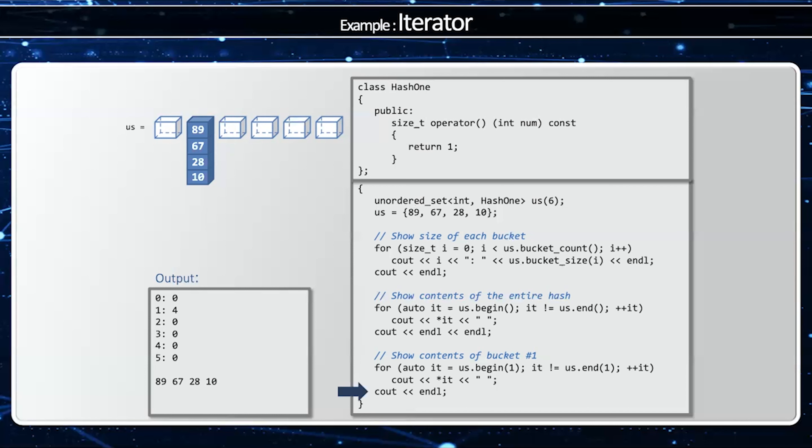And when I show the contents of bucket one that's also going to be 89, 67, 28, and 10.